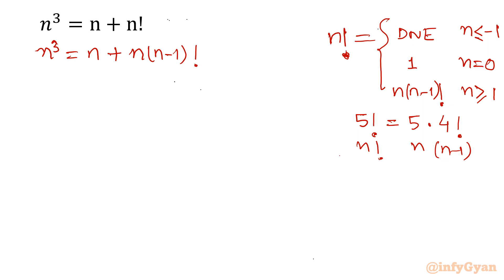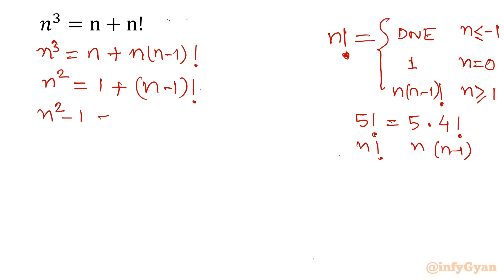Let us divide both sides by n. We get n squared equals 1 plus (n-1) factorial. Now take away 1 from both sides, so n squared minus 1 equals (n-1) factorial.